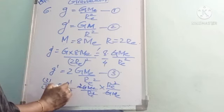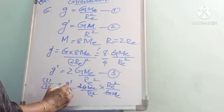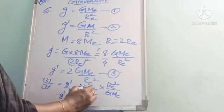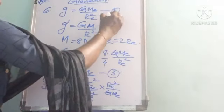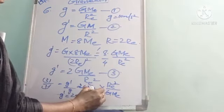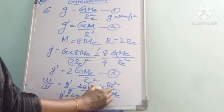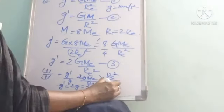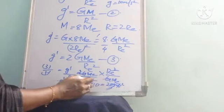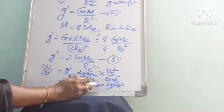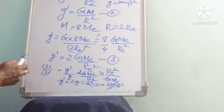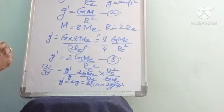We found g' = 2g, and since g = 10 m/s², g' = 2 × 10 = 20 m/s². That is the acceleration due to gravity at the planet.